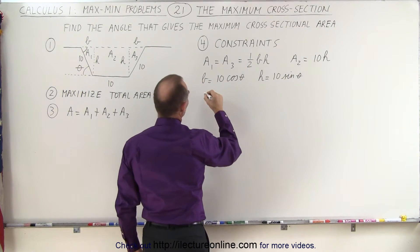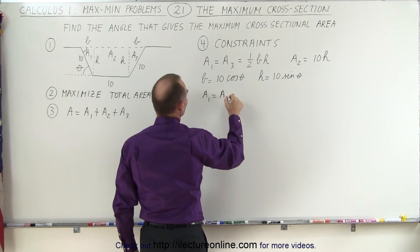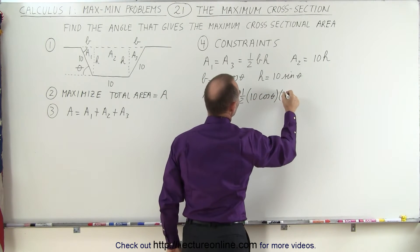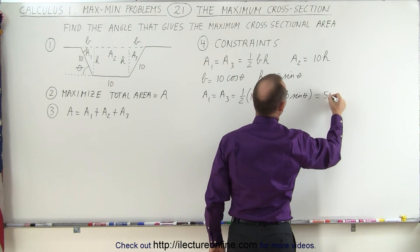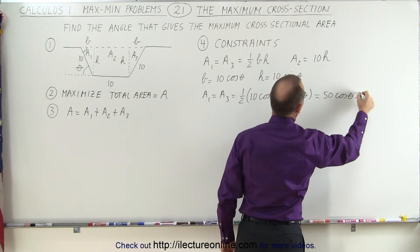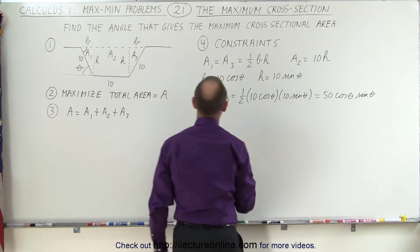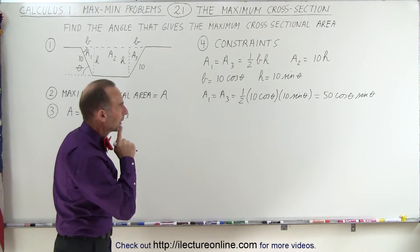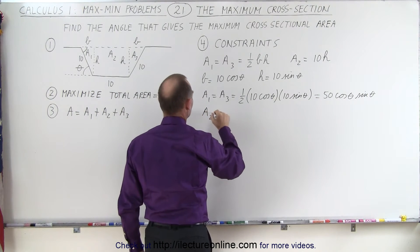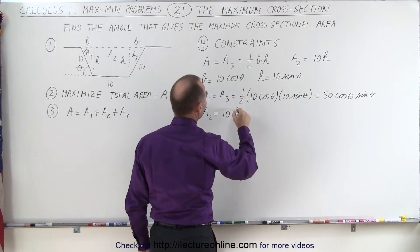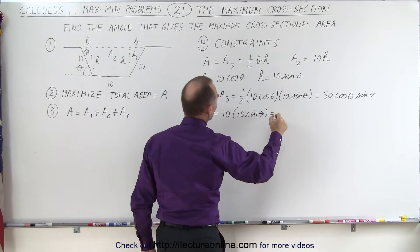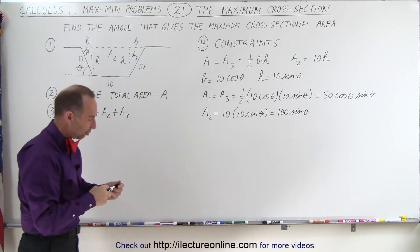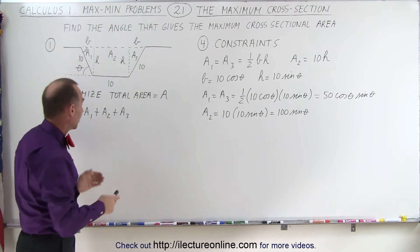Plugging those values back in: A1 equals A3 equals one-half times the base times the height, which gives 50 cosine theta times sine theta. Since there are two triangles, A1 plus A3 together equals 100 cosine theta times sine theta. For A2, that equals 10 times H, and H equals 10 sine theta, so A2 equals 100 sine theta. We now have A1, A2, and A3 expressed solely in terms of angle theta.